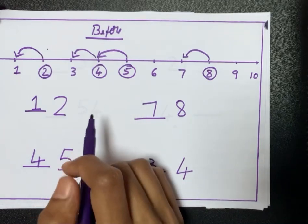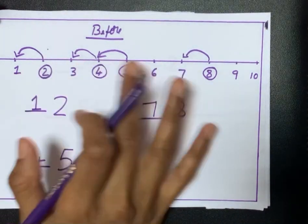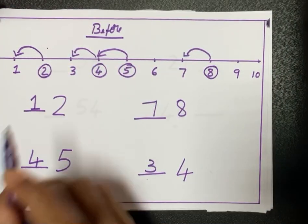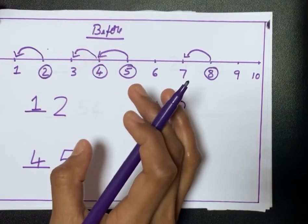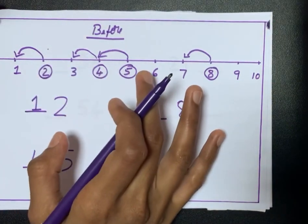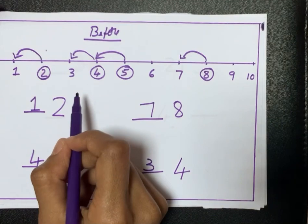Once your child is thorough with before and after numbers, you can test them without using the scale. In the beginning, use the scale to help them understand the concept; later on, teach them without the help of the scale.